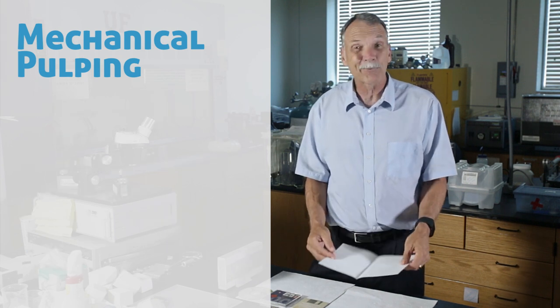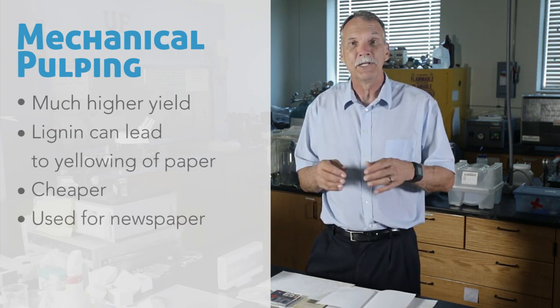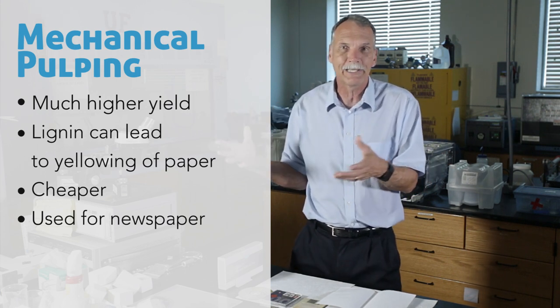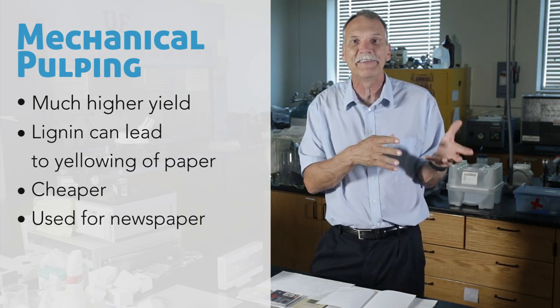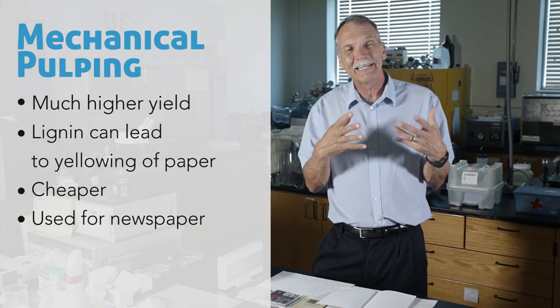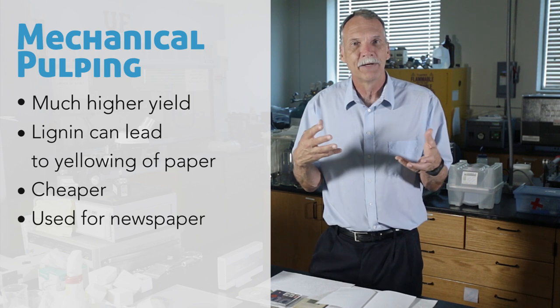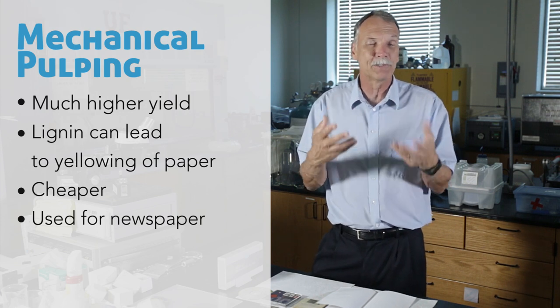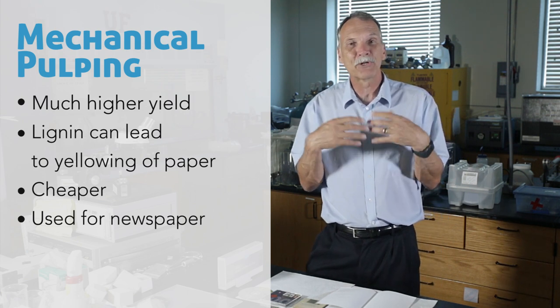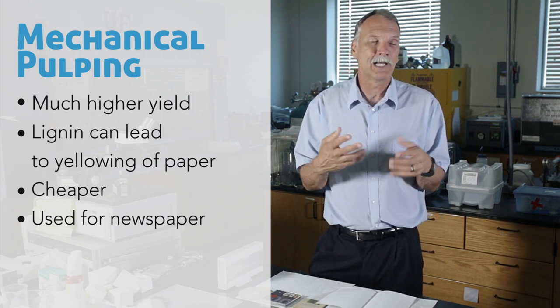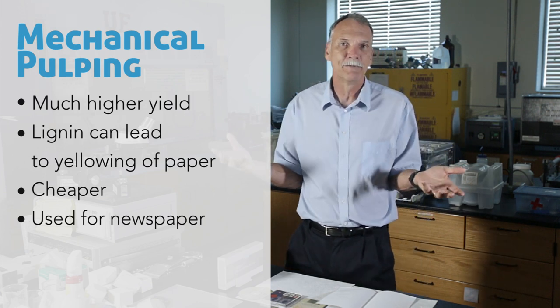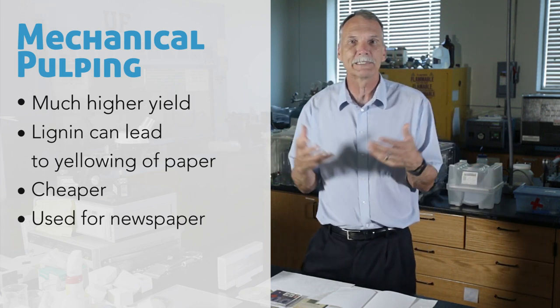The advantage of doing it this way—mechanical pulping—is that you get a much higher yield. If I start with 100 pounds of wood, I get nearly 100 pounds of pulp at the end because I haven't taken anything away. But the lignin tends to yellow with time. So even though the paper you're making is cheaper, it tends to have less strength and will degrade much more rapidly. That paper that is mechanically pulped is what we use for newspaper because newspaper typically yellows and you want something inexpensive.